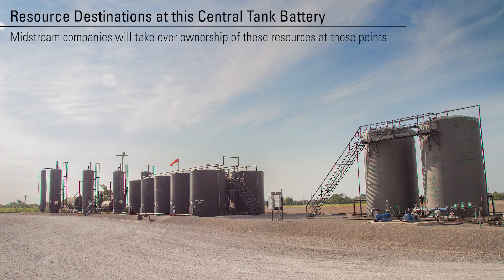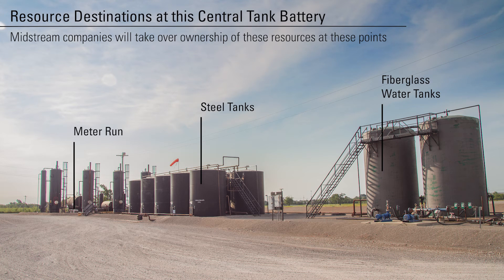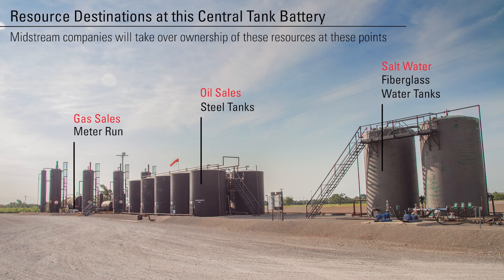This picture shows us the destination of three other resources produced at the central tank battery. Midstream companies will take over ownership of those resources at different areas labeled in the picture. The meter run will be recording gas sales that take place. The steel tanks on the location is where the oil sales take place, and the fiberglass tanks tell us that salt water is being stored there or made ready for disposal.